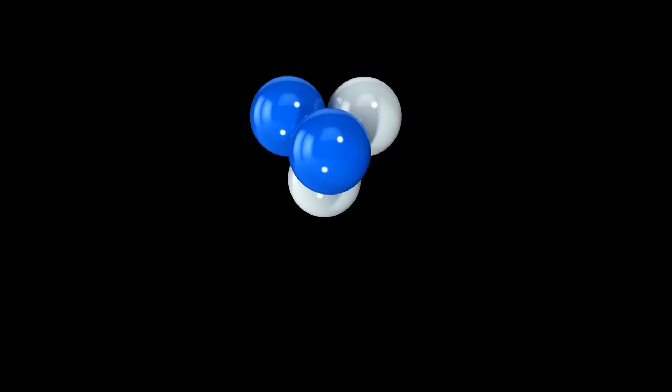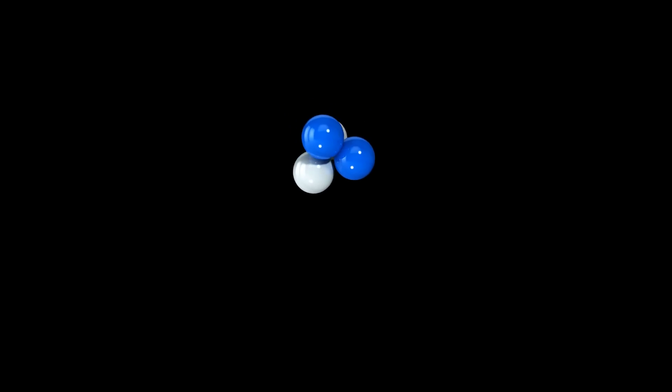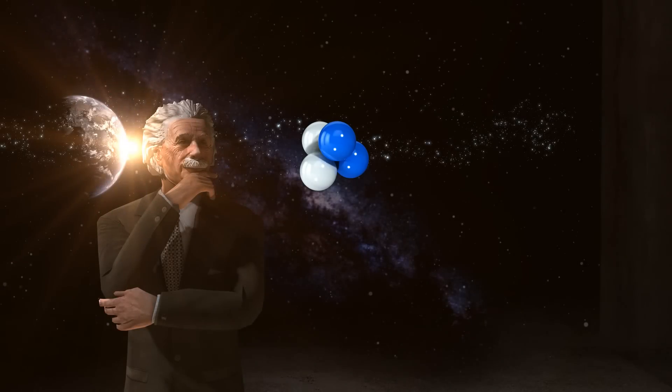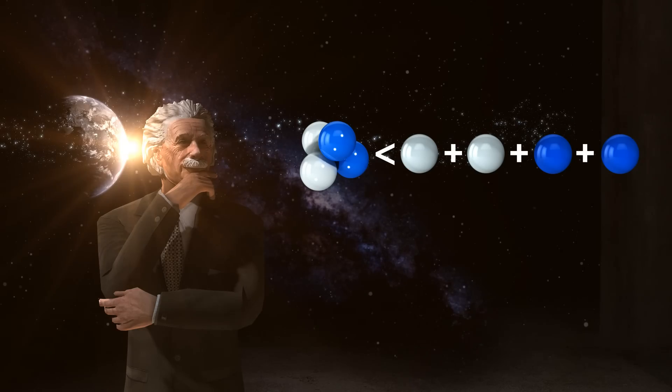The nucleus consists of nucleons such as protons and neutrons. These nucleons are bound together with strong nuclear force. The mass of the bound nucleons is bigger than the sum of each separate nucleon. This is because the bonding energy between the nucleons are converted from mass.